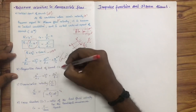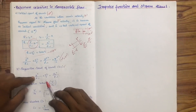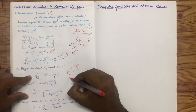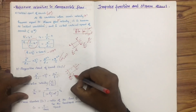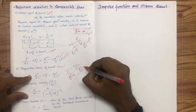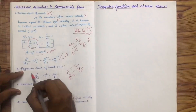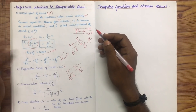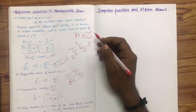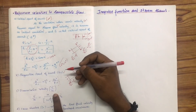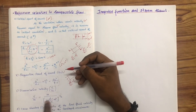We also define the stagnation speed of sound A0, where A0 equals the square root of gamma R T0. The dimensionless velocity is expressed as V divided by A0, which is the flow velocity divided by the stagnation speed of sound. Another dimensionless velocity is V divided by V-max, which is the ratio of local fluid velocity to the isentropic maximum speed.